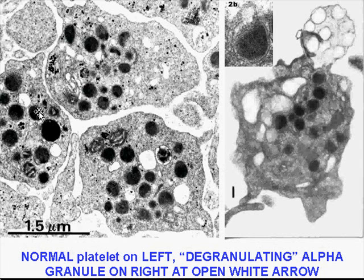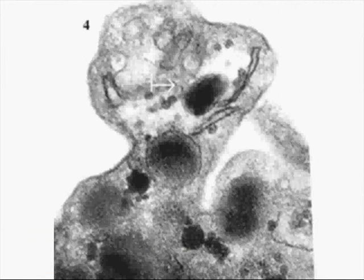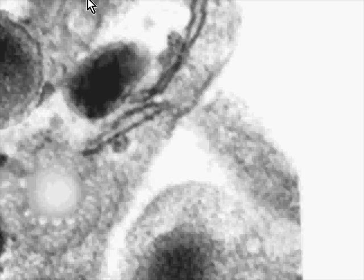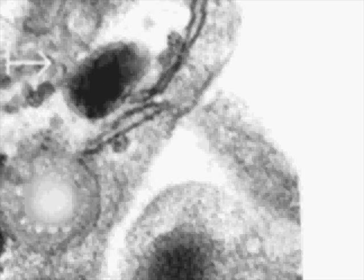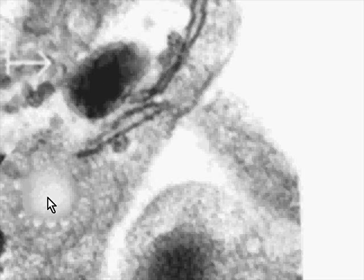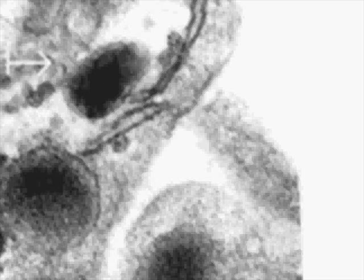Here are some more platelets — no nucleus, but a lot of dense granules with all the things they're supposed to have. In the process of degranulating, I have a movie here, and I'll try to show you the movie of a platelet degranulating. You can see the delta granule being ultimately released — that's how degranulation happens.